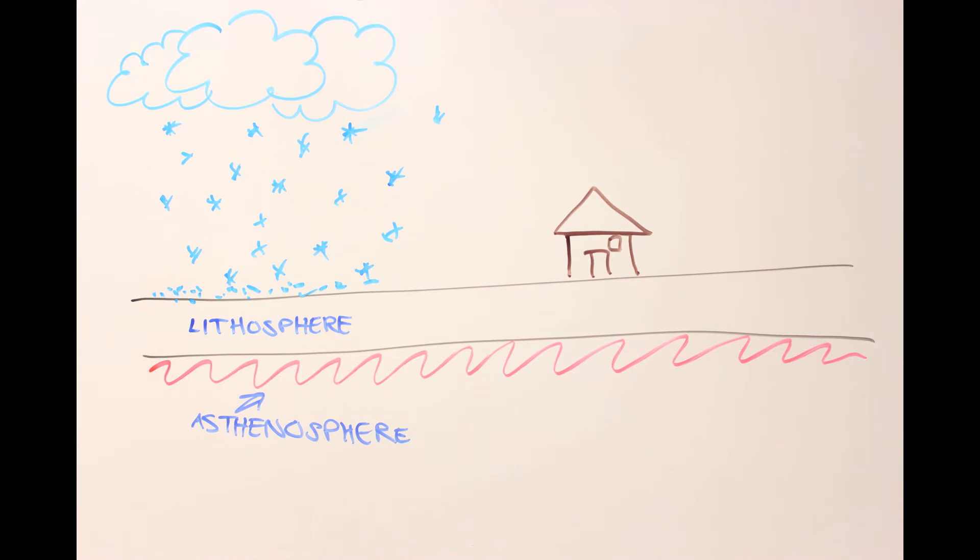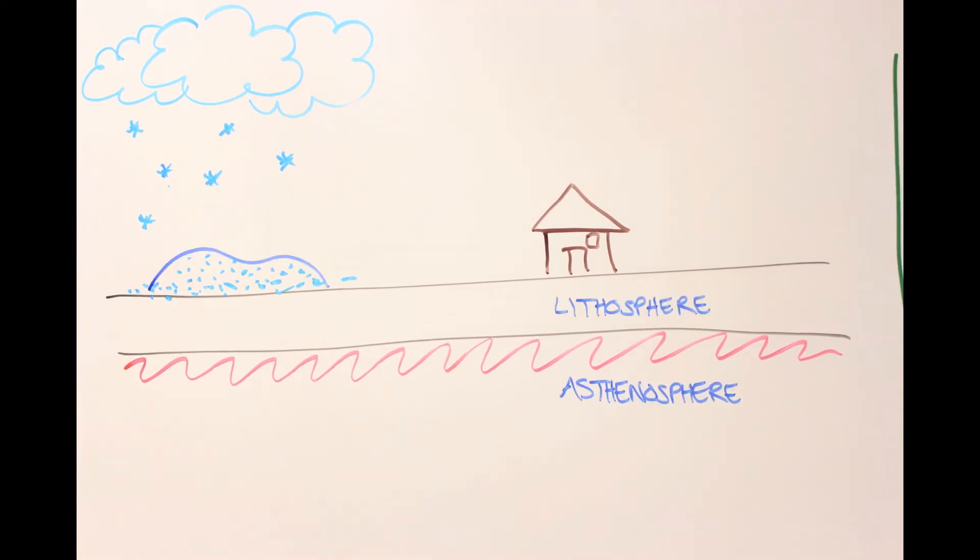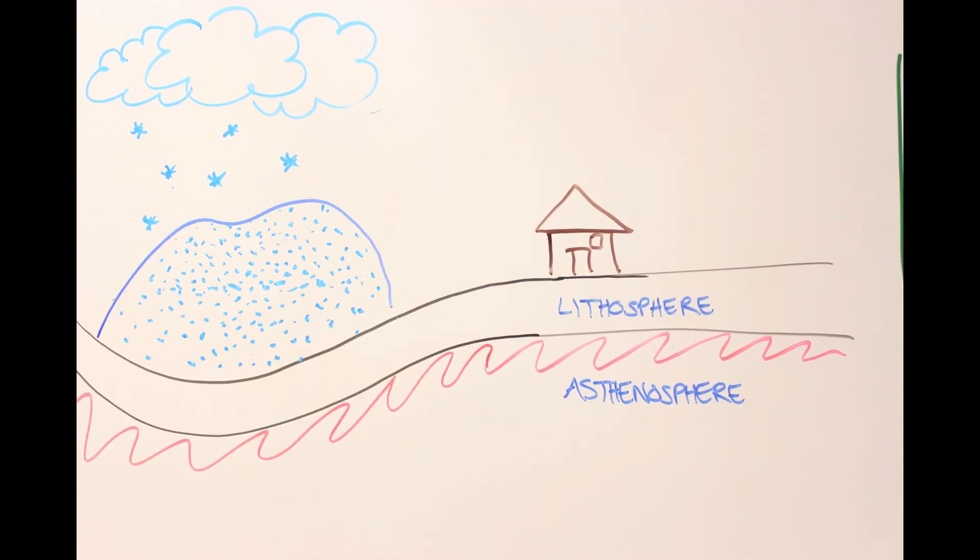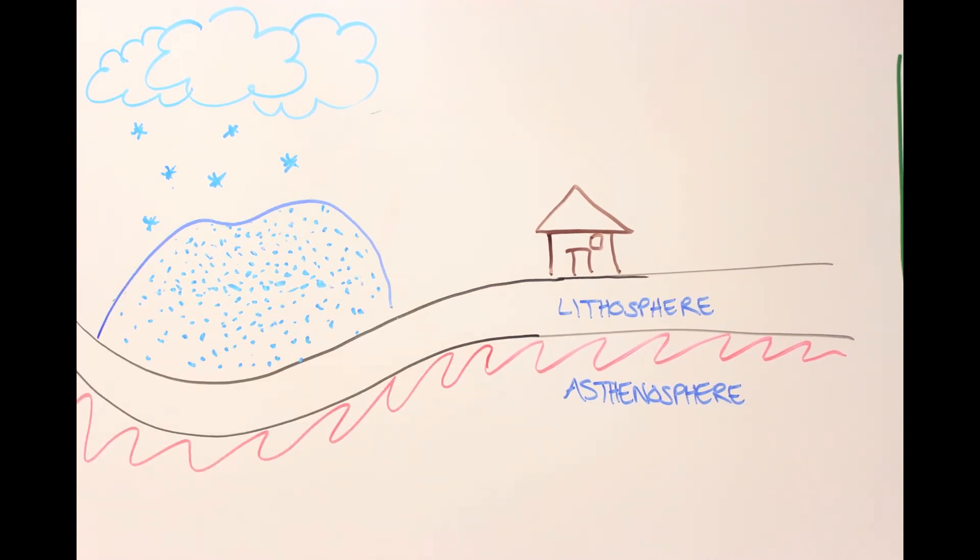One way in which weight is added to the lithosphere is through glaciation. As the glacier grows, it puts more and more pressure on the lithosphere, which gradually bends downward into a bowed shape, disturbing isostatic equilibrium.